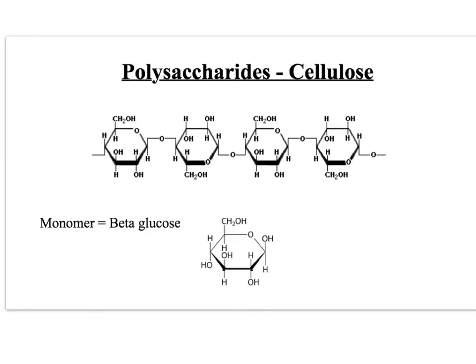Cellulose is the final polysaccharide you need to know about — quite different to the other two. It's not a glucose storage molecule or an energy store; it has a different structural role. The monomer, rather than alpha glucose, is beta glucose. The hydroxyl group on carbon-1 points up rather than down, which means the monomers alternate — rotated 180 degrees each time. This creates a really long, straight chain.